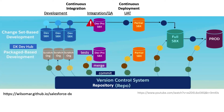Many companies are now able to even completely automate movement from staging into prod, a process called continuous delivery. They benefit from agility because of comprehensive tests automated at every step.